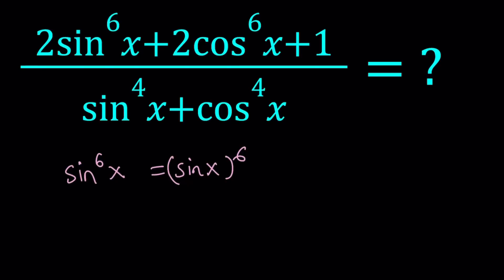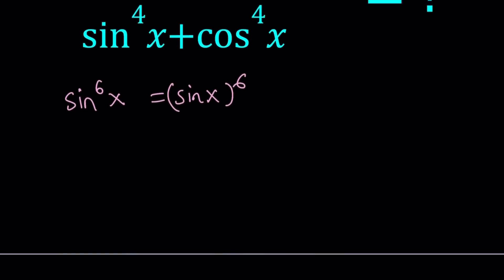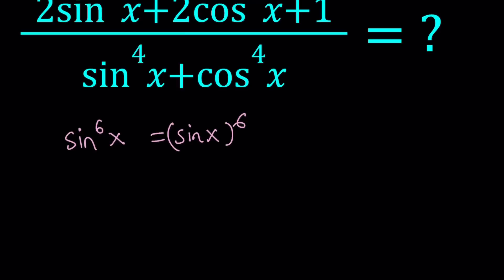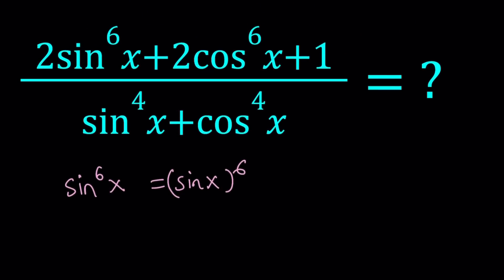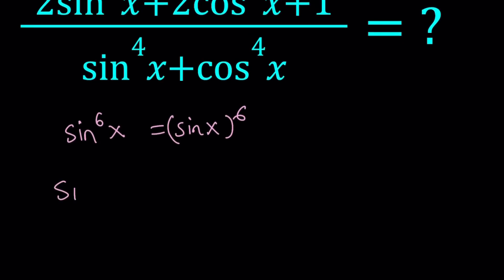I want to get the sum of sine x to the 6th and cosine x to the 6th in the numerator. It should be a well-known expression if you are dealing with trigonometry. One of the most important identities in math — sine squared x plus cosine squared x equals 1 — comes from the Pythagorean theorem.